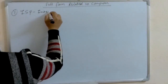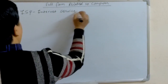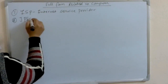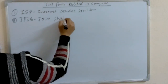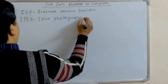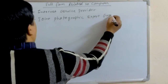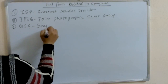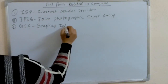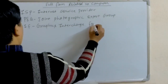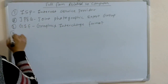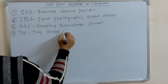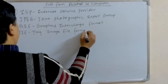ISP: Internet Service Provider. JPEG: Joint Photographic Export Group. GIF: Graphics Interchange Format. TIF: Tag Image File Format.